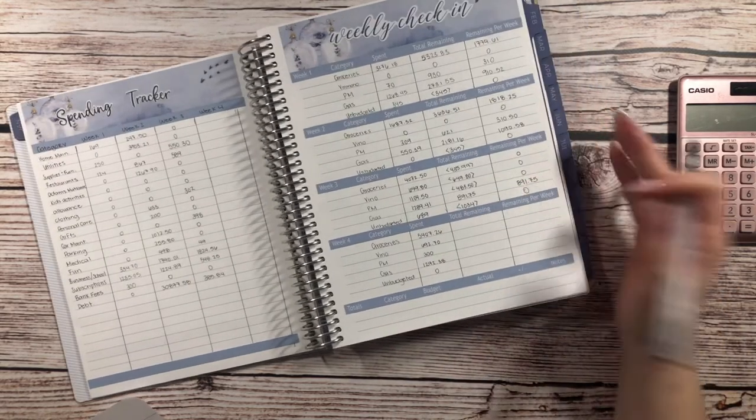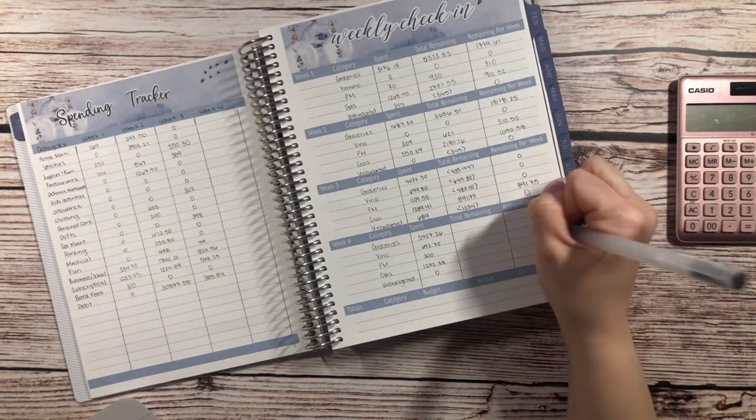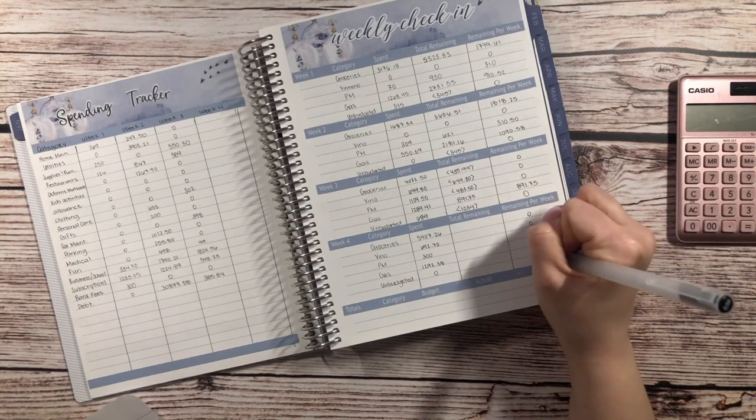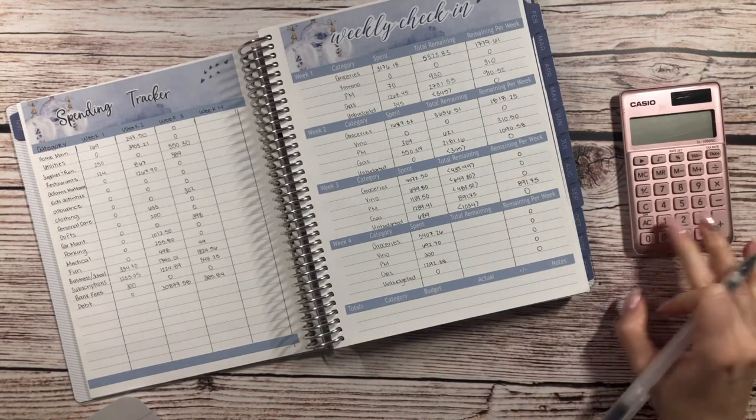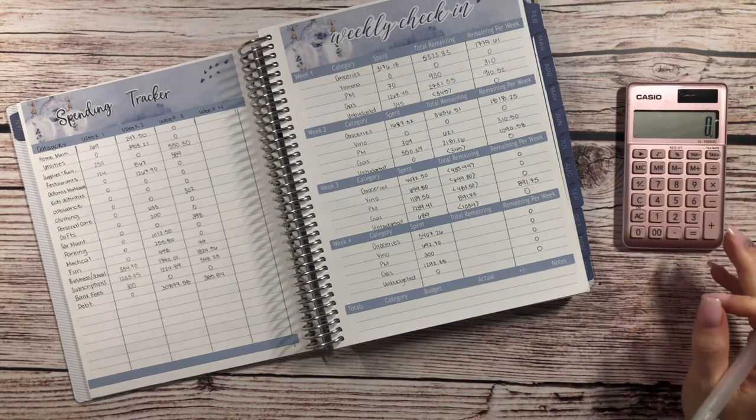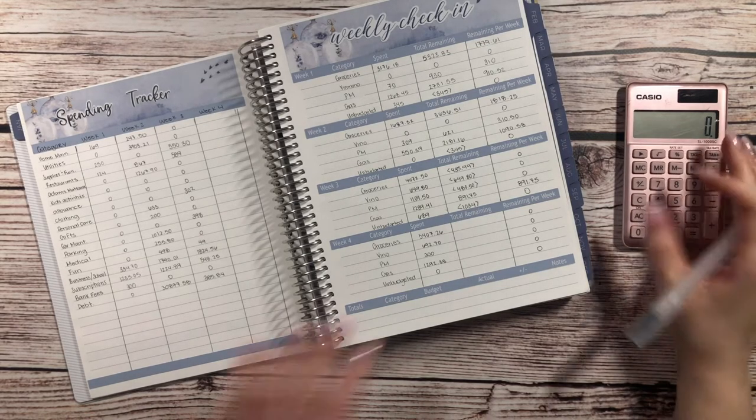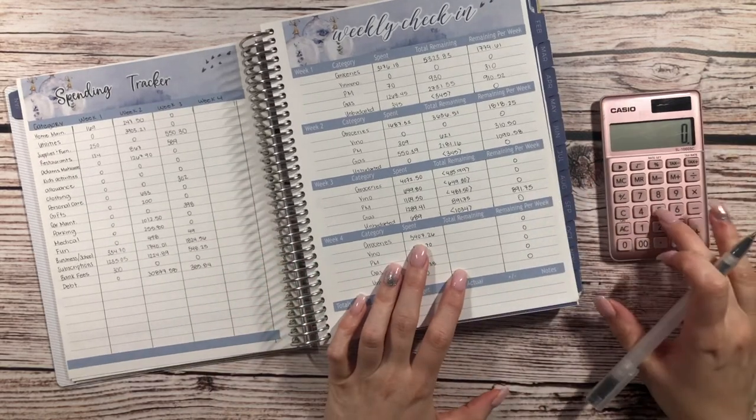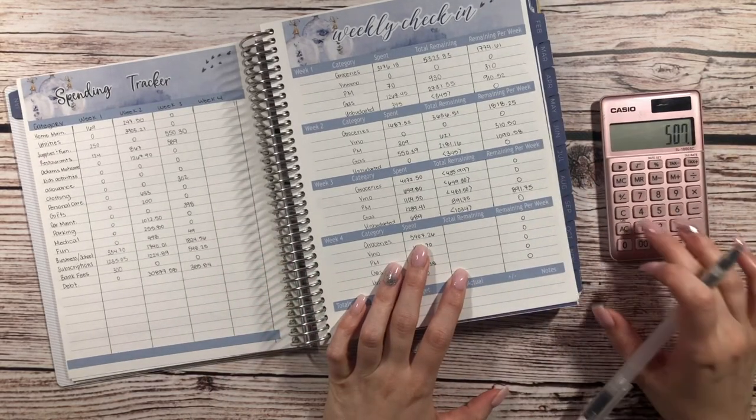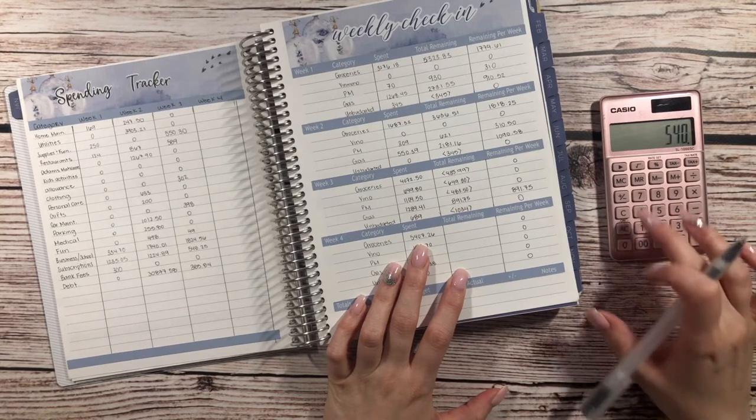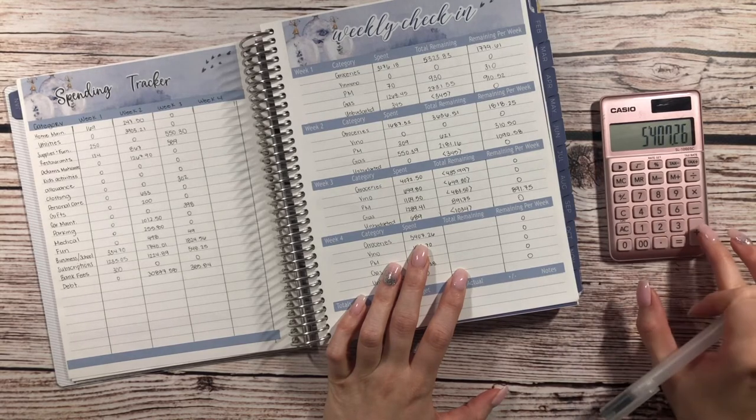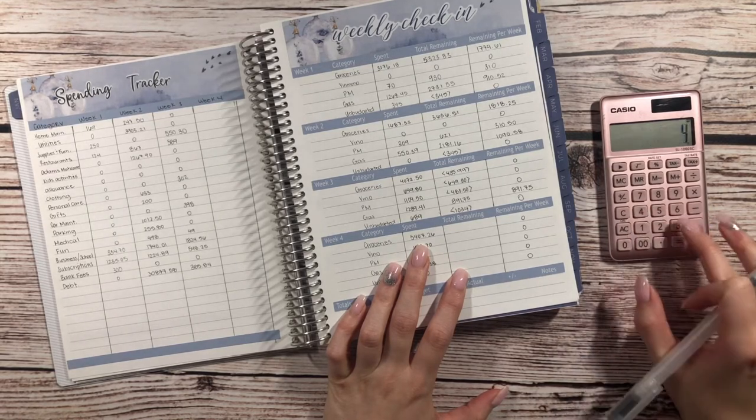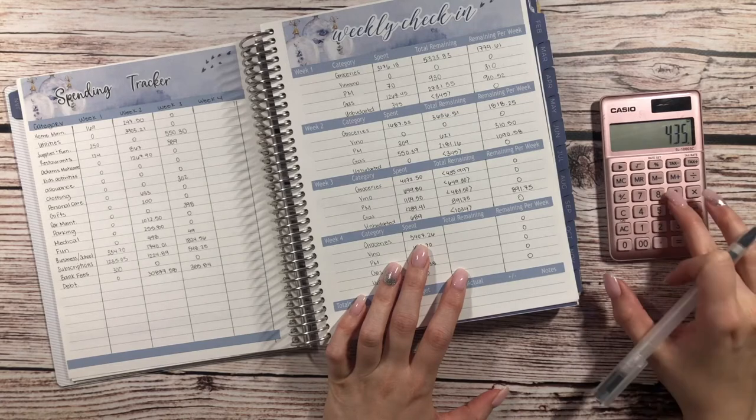So there wouldn't be anything remaining for any of the weeks because the month will be over. So it'll just be doing these numbers. So we have 5,407.26 plus 435.99.